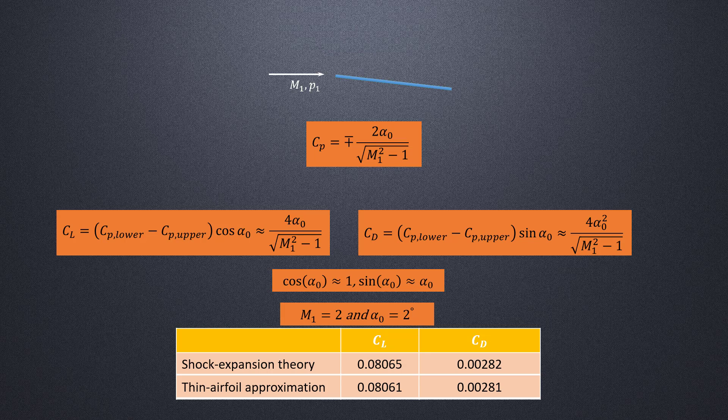For the same operating conditions, using the thin airfoil theory, we obtain a CL of 0.08061 and a CD of 0.00281. This indicates that even though approximate, the thin airfoil theory can give almost identical predictions under the appropriate conditions, as the exact shock expansion theory.